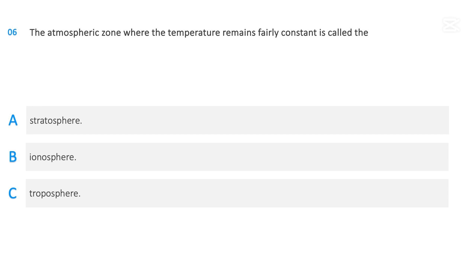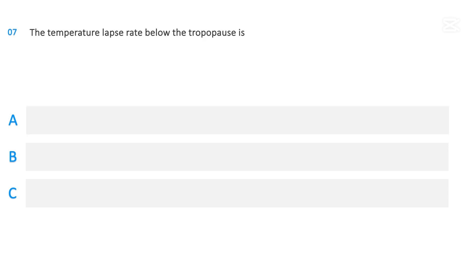The atmospheric zone where the temperature remains fairly constant is called: the stratosphere, ionosphere, or troposphere? The correct answer is the stratosphere.